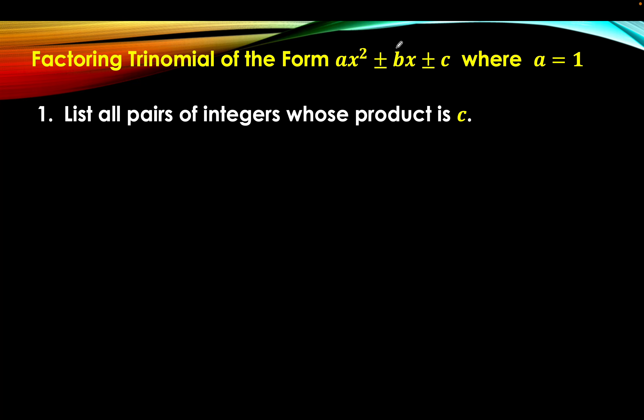The first step is we're going to list all pairs of integers whose product is c. Suppose the given trinomial is x squared plus 11x plus 18. First step, we're going to list all pairs of integers whose product is c. And from the given, c is equal to 18.